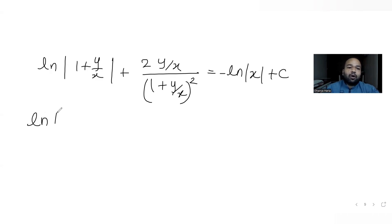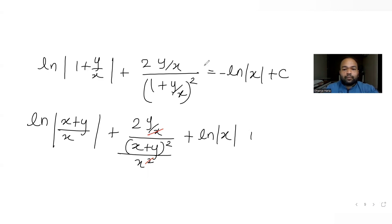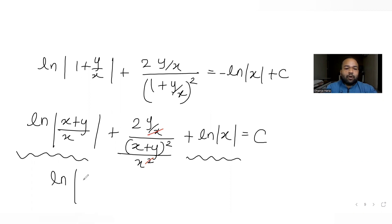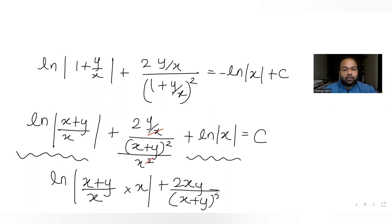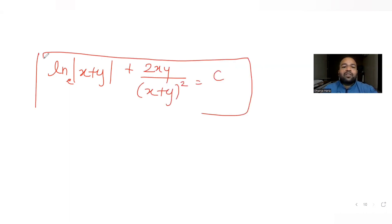Simplifying: 1 + y/x = (x+y)/x, so log|(x+y)/x| = log|x+y| − log|x|. And 2(y/x) / ((x+y)/x)² = 2(y/x) · x²/(x+y)² = 2xy/(x+y)². Adding −log|x| from the right side, the log|x| terms cancel, leaving: log|x+y| + 2xy/(x+y)² = C.